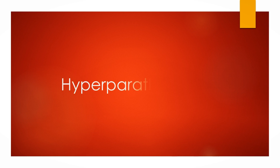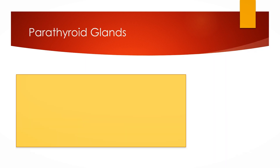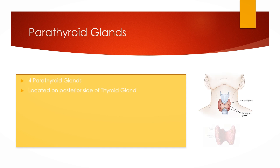Hello and welcome to Last Second Medicine channel. In this video we will talk about hyperparathyroidism. There are four parathyroid glands located on the posterior aspect of the thyroid gland, and parathyroid glands release parathyroid hormone which has an important role in calcium and phosphate balance.